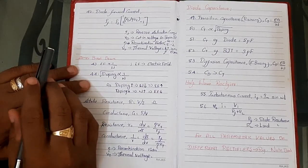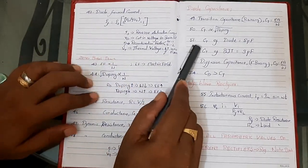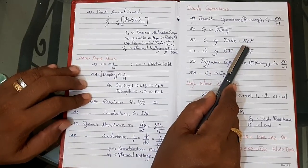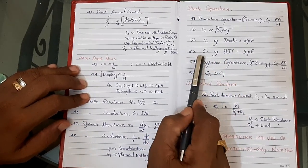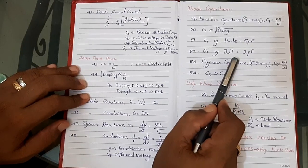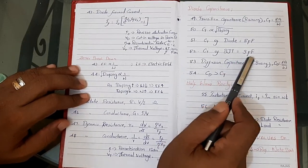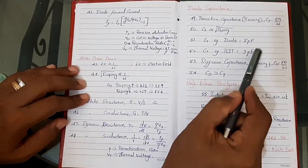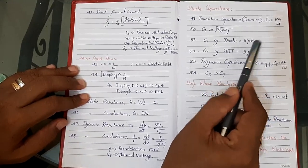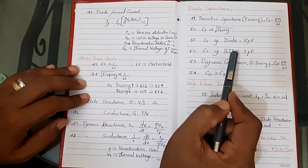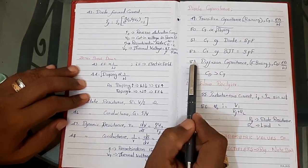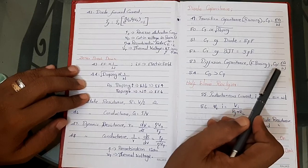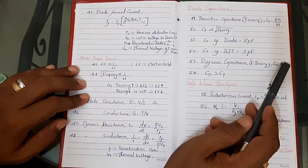Number 51: Transition capacitance CT of a diode equals 5 picofarads. Number 52: Transition capacitance CT of BJT (Bipolar Junction Transistor) equals 3 picofarads. So if these values are not given in the question, they should be considered by default — 5 picofarads for diode and 3 picofarads for BJT. Number 53: Diffusion capacitance under forward biasing condition, CD = εA divided by W.